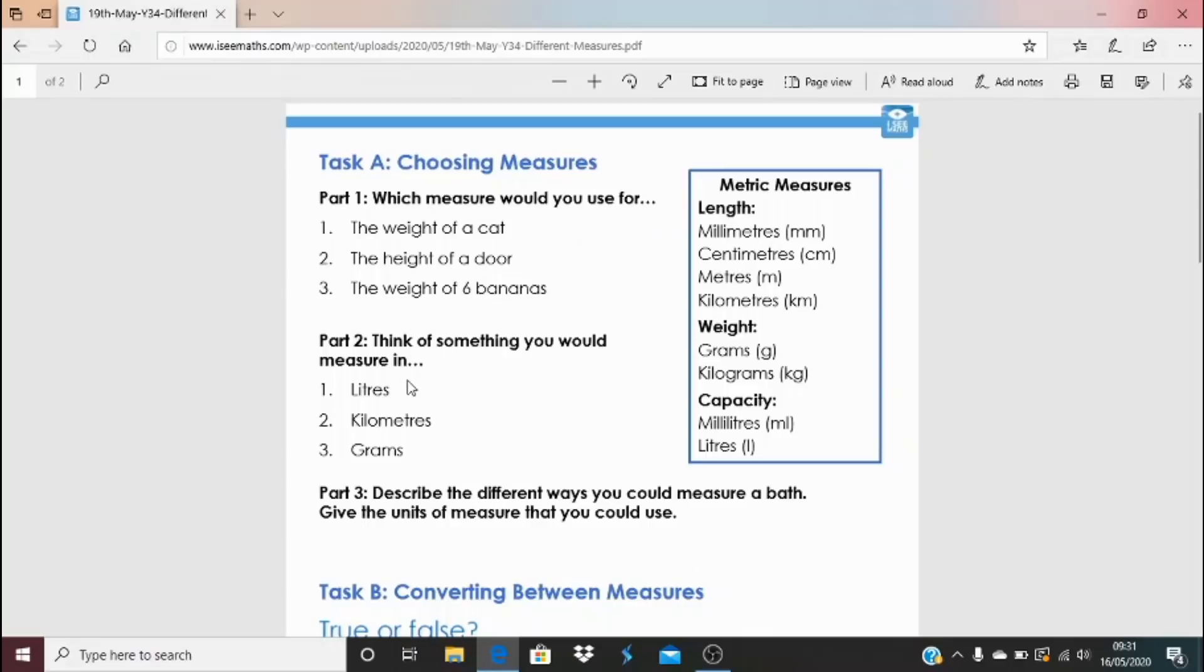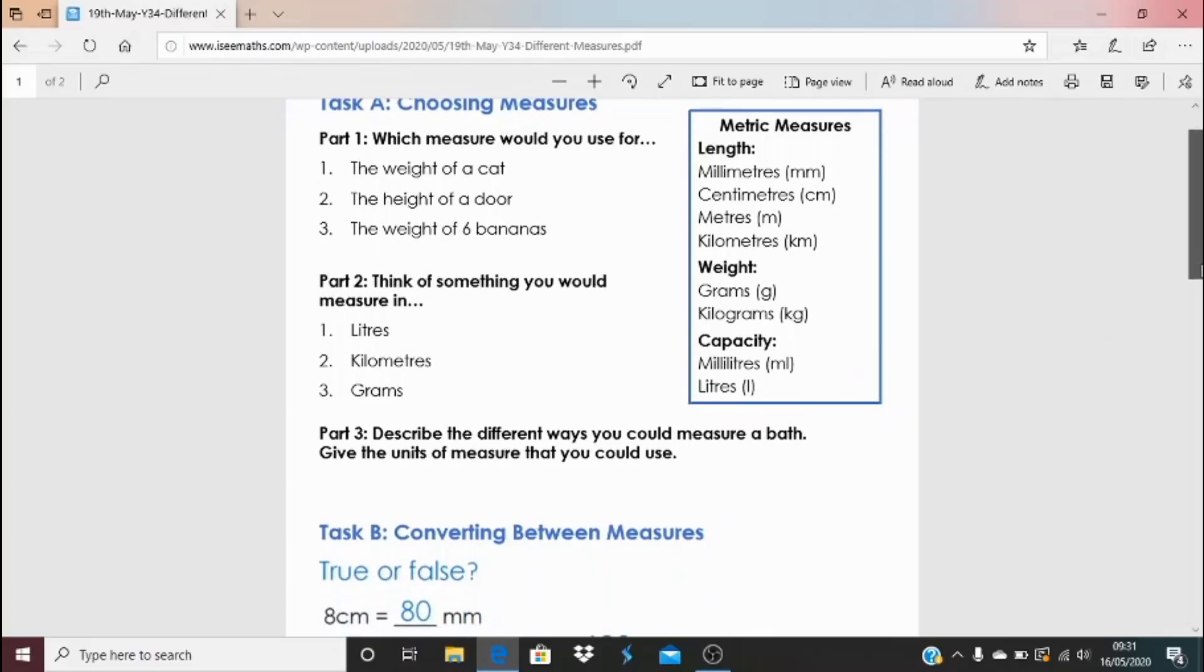Think of something that you would measure in liters or kilograms or grams. I wonder, if you want a little extension, you could think about, well can you think of something you could measure in kilometers also, that you might measure in meters as well, like the same distance? Or for grams, you might think, is there something you could measure in grams or grams and kilograms? So that's how you could extend there.